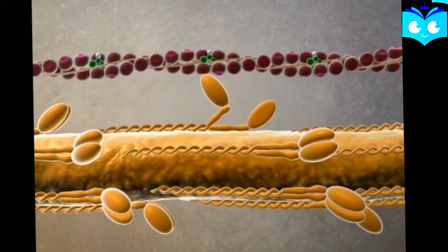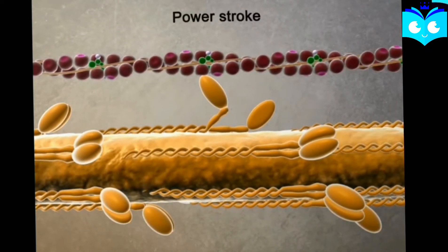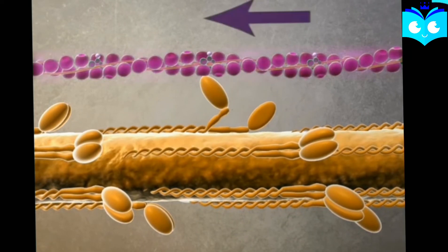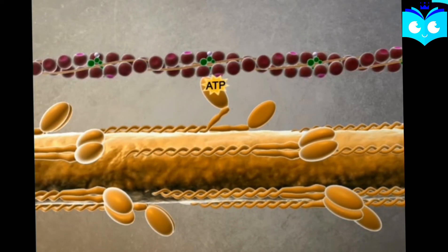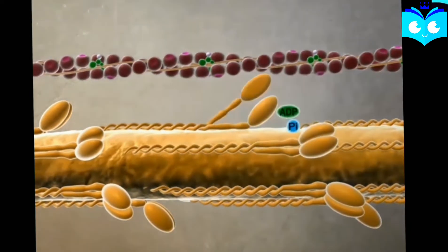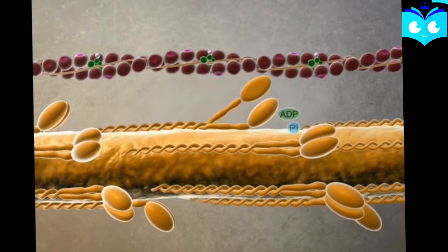This step is known as the power stroke. Actin moves towards the center of the sarcomere. Now another ATP binds to the ATP binding site on the myosin, which leads to detachment of actin and myosin, meaning breaking of the crossbridge. This process occurs continuously for contraction of muscle.